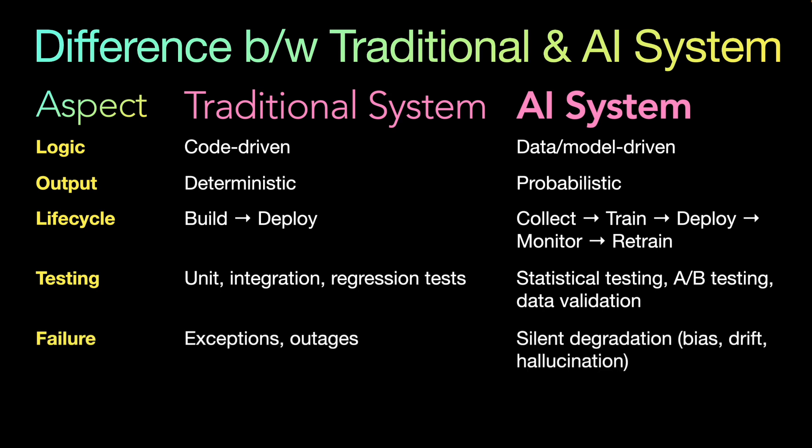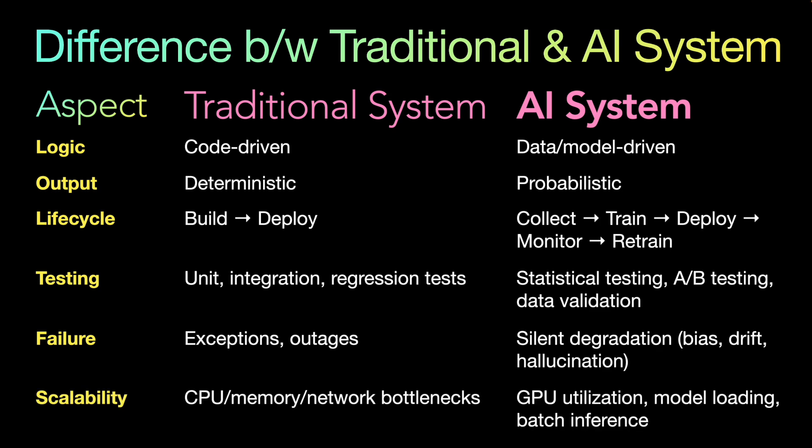Failures are different too. In traditional systems, failures are caused by exceptions, outages, or bad code. In AI systems, failures are more silent — a silent degradation based on bias, drift, or hallucination. These are hard to detect because the model might build biases or only respond well on things it has learned. For scalability, traditional systems scale CPUs, memory, and network bottlenecks, while AI systems focus on GPU utilization, model loading, and batch inference.